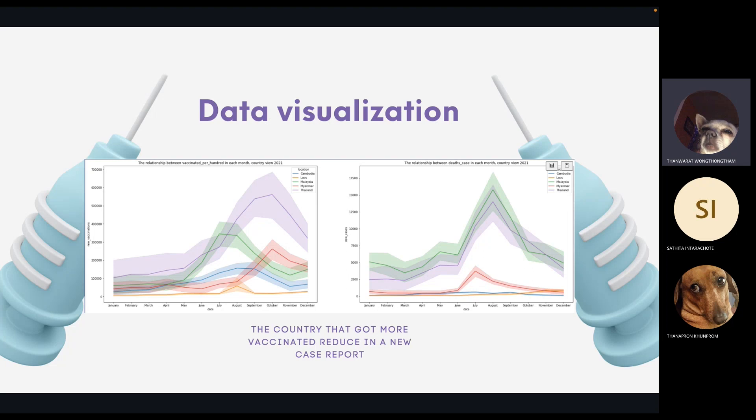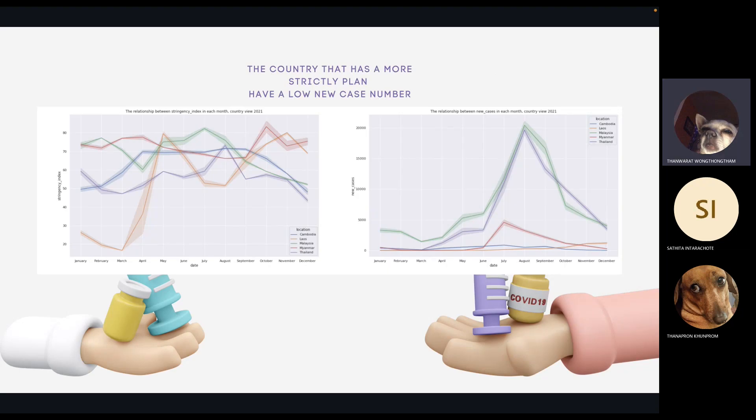We created line graphs to see the relationship in each month to compare the values in each month. As can be seen in the left-hand side graph, the relationship between vaccinations in each month in the year 2021, shows the number in each country increased from July to October, and dropped down after November. On the right-hand side, there are relationships between stringency in each country. We show that countries with the most stringent epidemic measures are countries with a high stringency index, such as Thailand, Myanmar, and Malaysia. There are the new cases that have decreased.